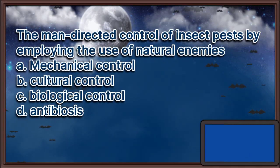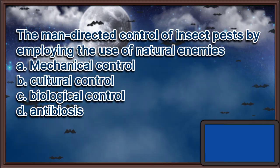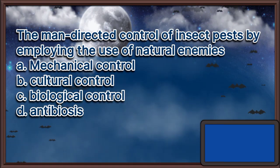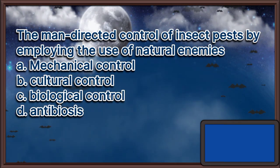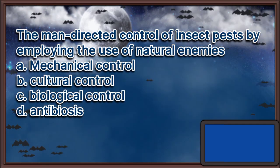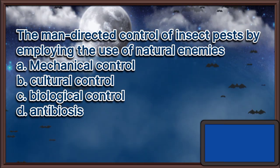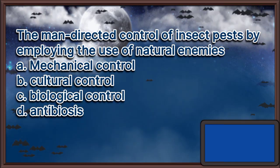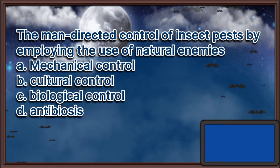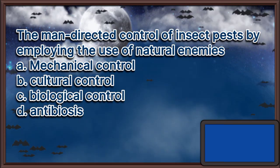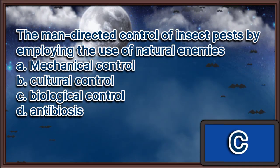The man-directed control of insect pests by employing the use of natural enemies: A. Mechanical control, B. Cultural control, C. Biological control, D. Antibiosis. The answer is letter C.